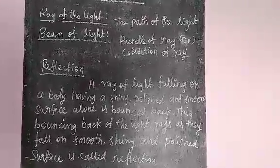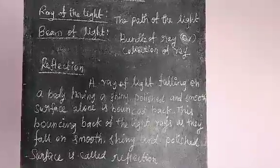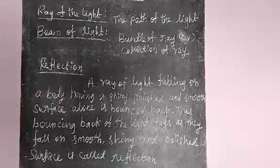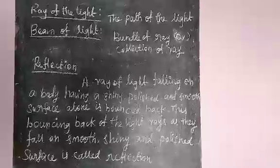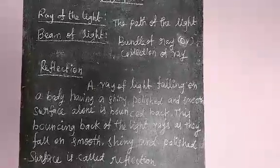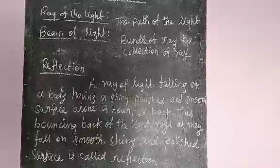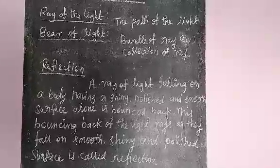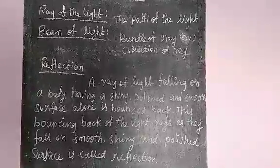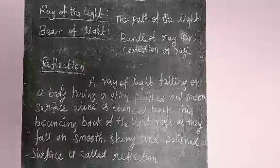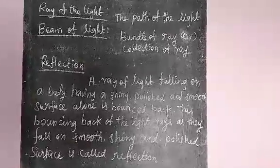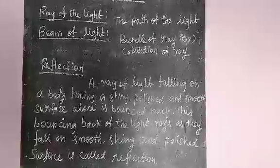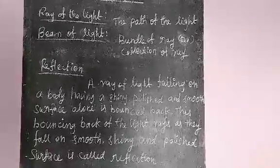How will you make a mirror? Highly polished metal — aluminium or silver — is coated on one side of the glass plate to make a mirror. The mirror can reflect 90% of light falling on it. Take a plain mirror and focus the light from the sun on the wall.